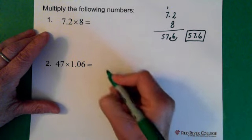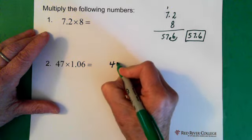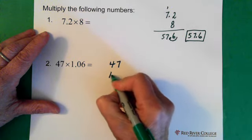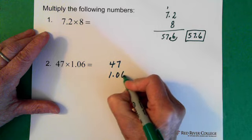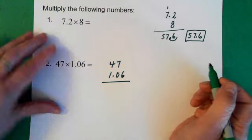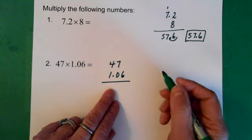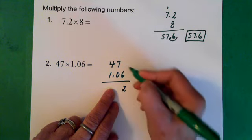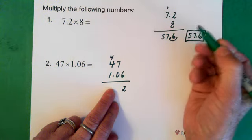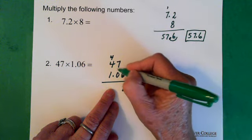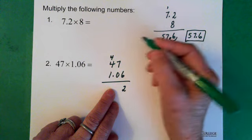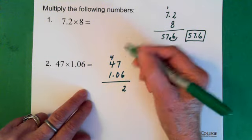Next question. 47 times 1.06. So here we take the 6 multiplied by the 7 and we get 42. The 2 goes down here and the 4 goes above the 4. 6 times 4 is 24. We add the 4 and we get 28.